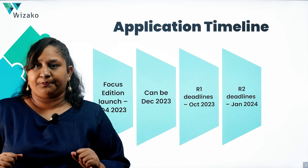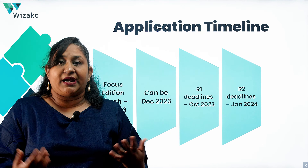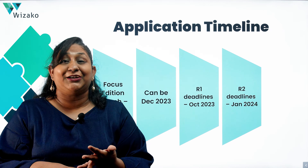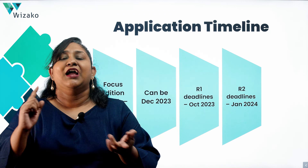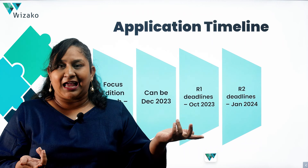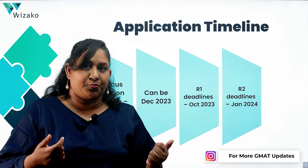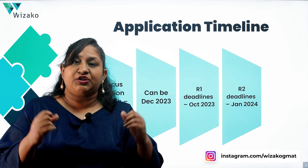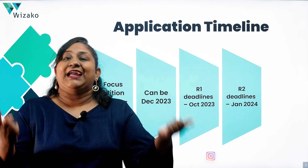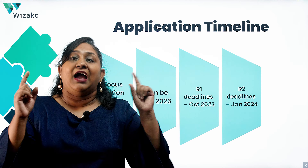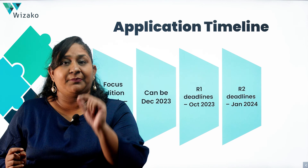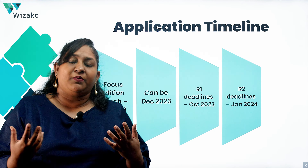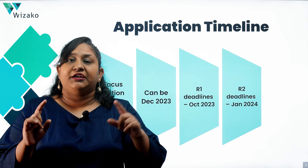You may still not have enough time to catch Round 2 deadlines even if the Focus Edition is out by then, because writing the GMAT is just one component of your application. You still need to network with business schools, talk to current students and alumni, attend virtual and in-person events, gather information, research schools, introspect about your career, write strong application essays, and get strong letters of recommendation in place.